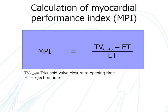Myocardial performance index is calculated by subtracting the ejection time, or ET, from the tricuspid valve closure to opening time, or TVC to O, and dividing the result by the ejection time.